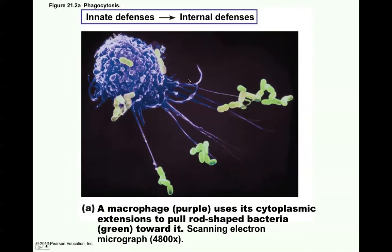This is an electron photomicrograph — a scanning electron micrograph — that shows this actually happening. They colorize it. It's showing this macrophage using cytoplasmic extensions to pull these rod-shaped bacteria toward it. It will engulf them, fuse with a lysosome, break them apart, and render them harmless.